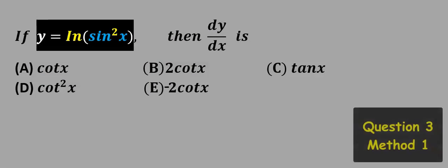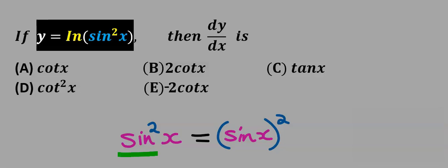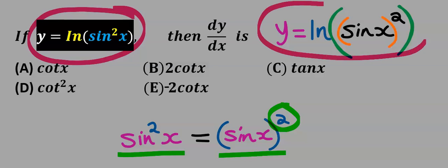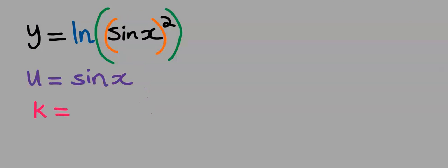Next consider this question. Before we solve this problem, remember that sin²(x) is the same thing as (sin(x))², all squared. Hence instead of the original form, we can rewrite it to look like this. Now sin(x) will be equal to u, and k will be equal to u².